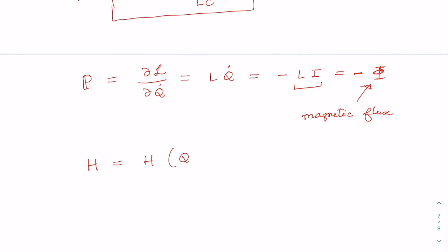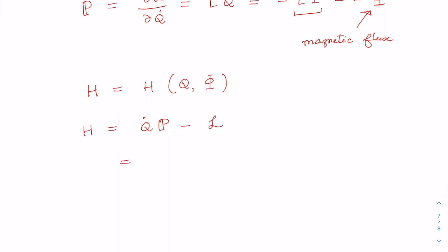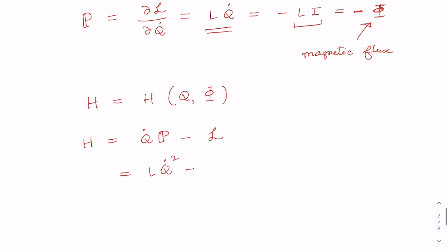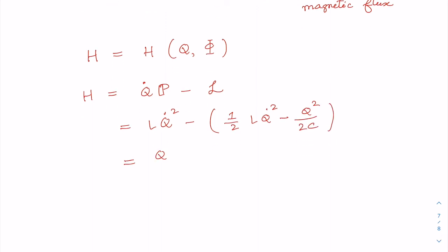The Hamiltonian, as a function of generalized coordinate Q and momentum phi, is given by: H equals Q-dot times P minus L. Since P equals L Q-dot, substituting gives: H equals L Q-dot² minus (1/2) L Q-dot² minus Q²/(2C), which simplifies to Q²/(2C) plus (1/2) L Q-dot². Writing it in terms of charge and magnetic flux, we have H equals Q²/(2C) plus phi²/(2L), since phi equals L·I.